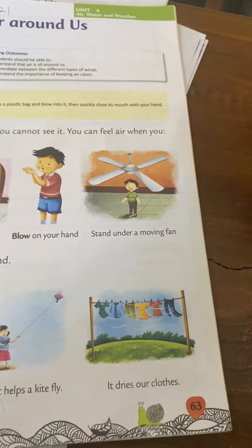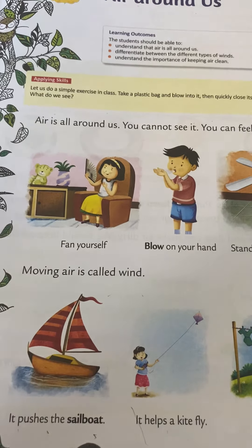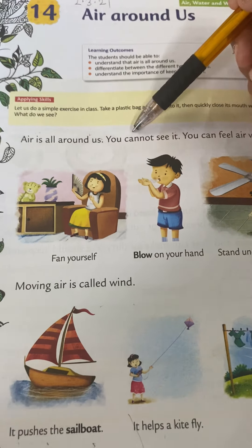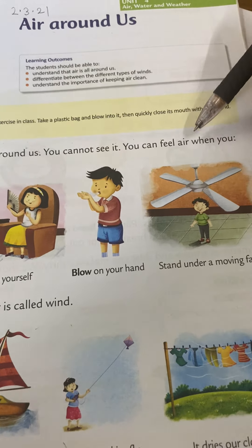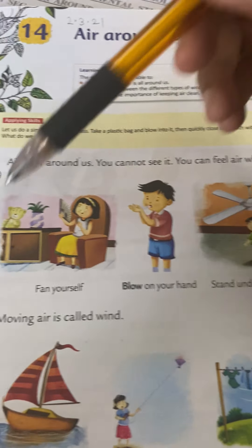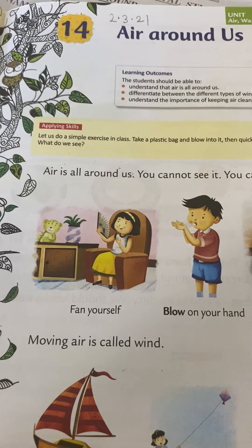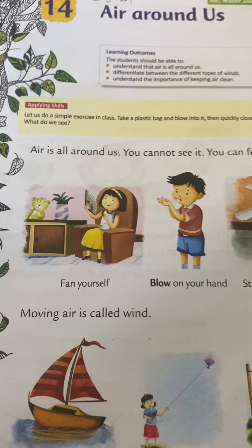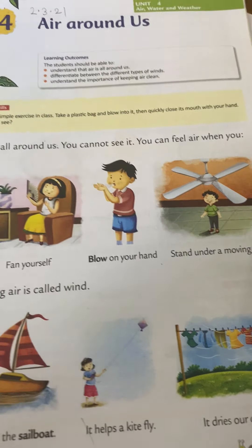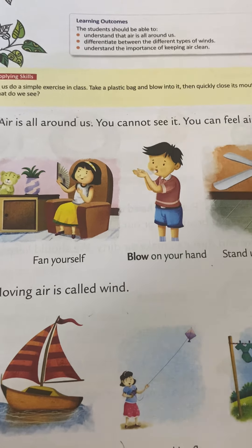Air is on page number 63. Please take out page number 63 and we shall move ahead. Air is all around us. You cannot see it. You can feel air when you fan yourself. So air is something that you cannot see, but you can certainly feel. Blow on your hand as the activity we did last time. Stand under a moving fan which is rotating, and we can always feel air. But can we really see it?